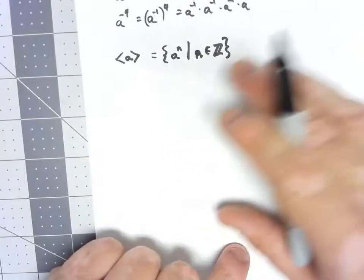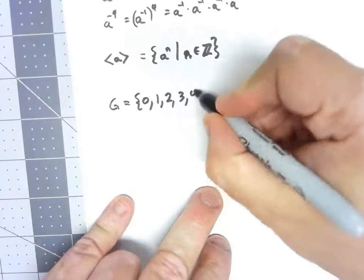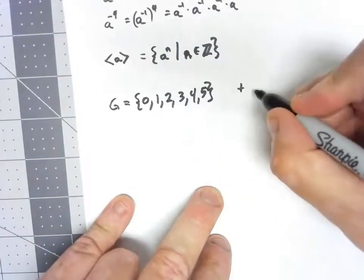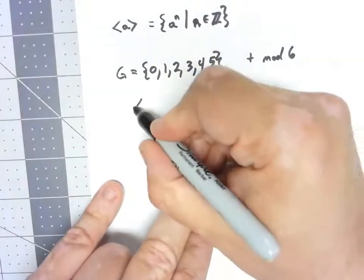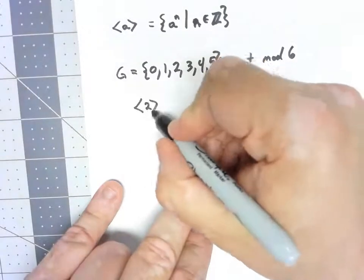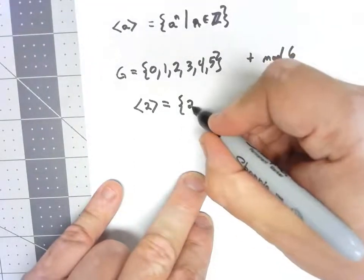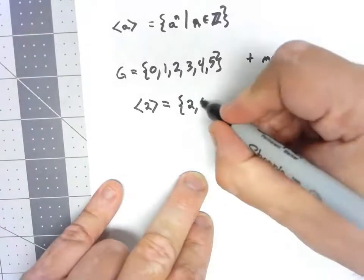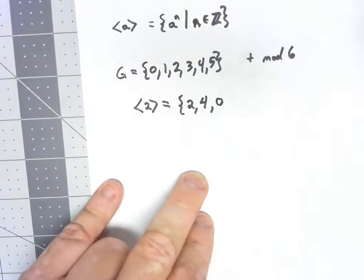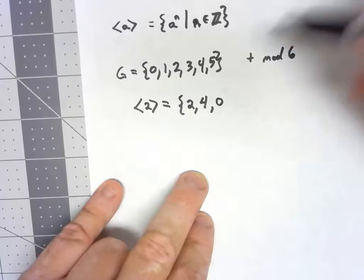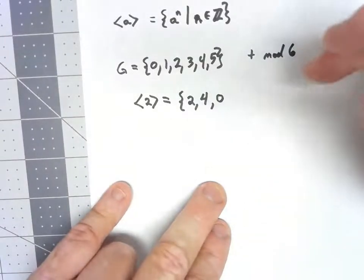Let's take a look at a couple of examples. First, let's consider the group G, which is the set {0, 1, 2, 3, 4, 5} under addition mod 6. Let's look at this notation applied to 2. It's going to have 2 to the first power, which is 2. 2 to the second power is 2 plus 2, which gives us 4. 2 to the third power, 2 plus 2 plus 2, is 6, which mod 6 gives us 0. 2 to the fourth is 8, which mod 6 is back to 2, so we just start repeating.